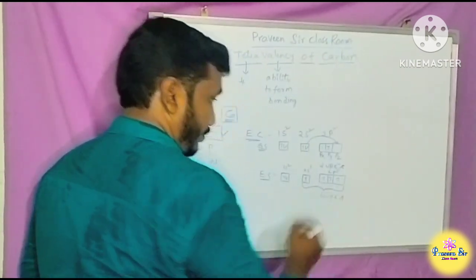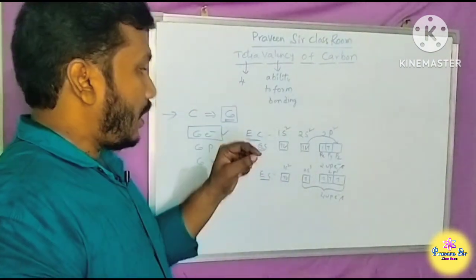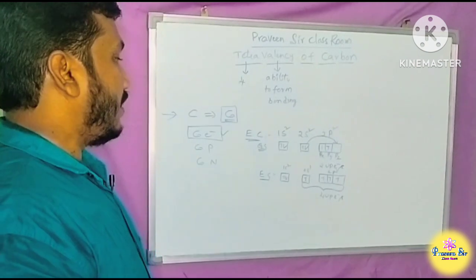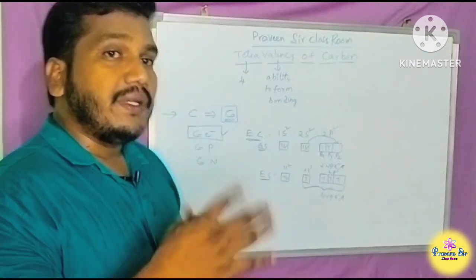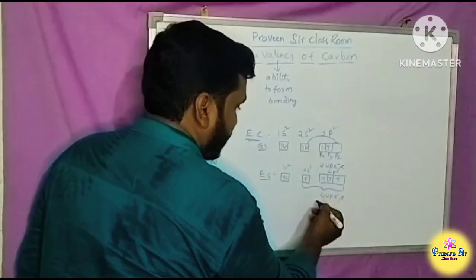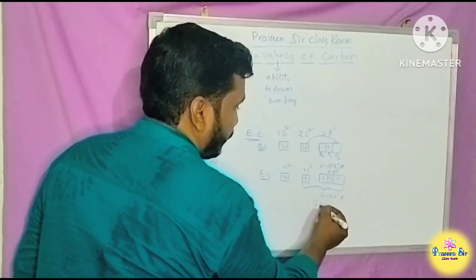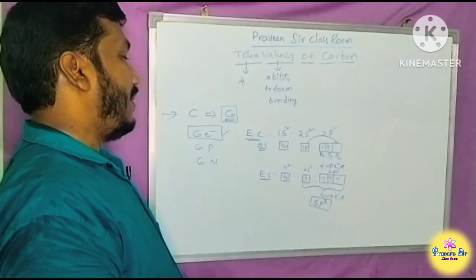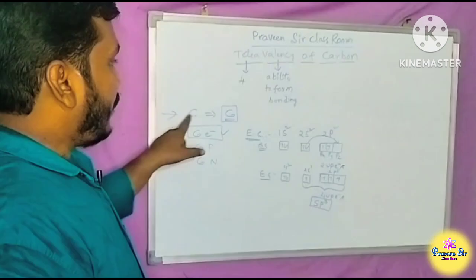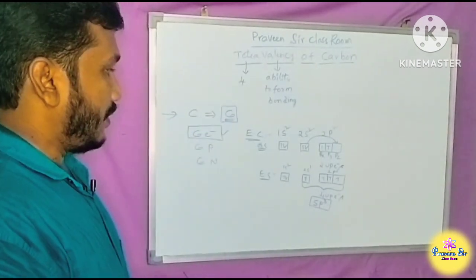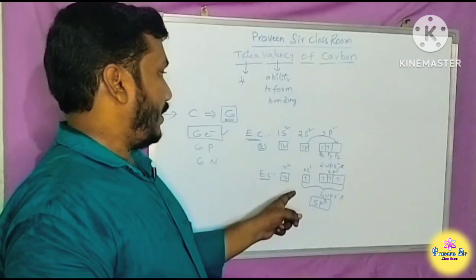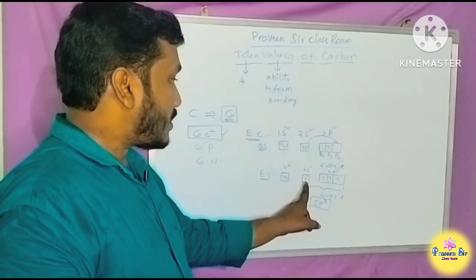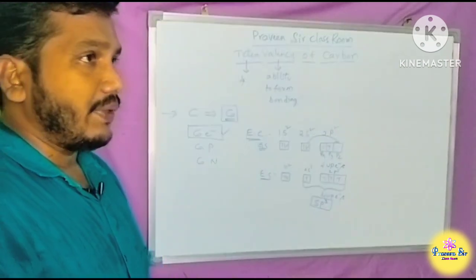In the excited state, one electron from 2s is promoted, giving the configuration 1s² 2s¹ 2p³. This results in 4 unpaired electrons, which means carbon can form 4 bonds.